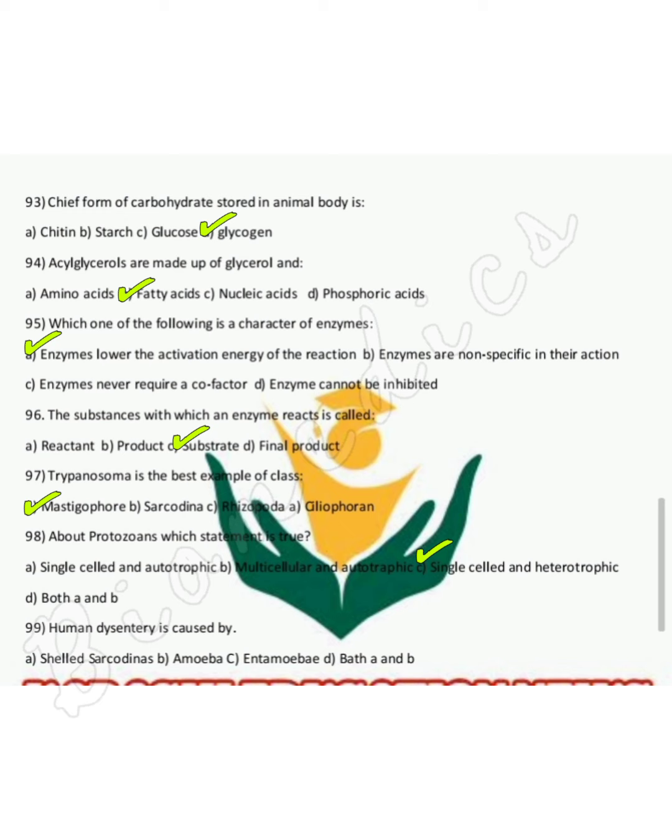Human dysentery is caused by Entamoeba histolytica. On page 124, under the Sarcodina heading, in the second paragraph, dysentery and GIT disorders are mentioned. The name Entamoeba histolytica is written on page 124.